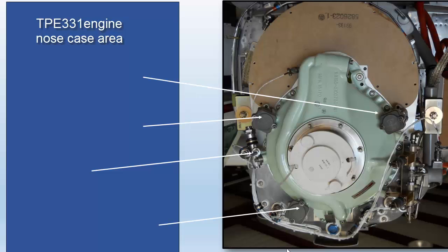Here is a view of the nose case area on a TP331 string gauge engine configuration. Here you see the first torque load arm assembly.